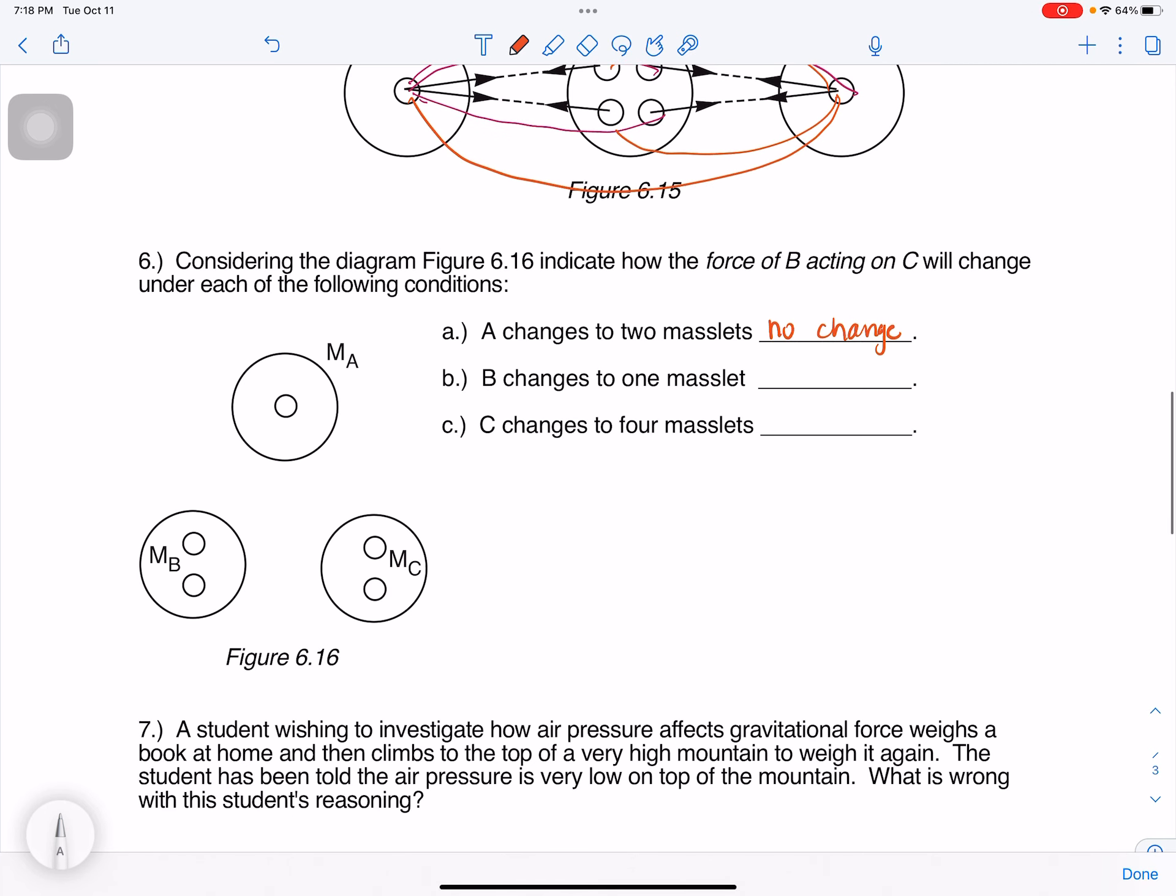B changes to one mass slit, so then we'll have one half the force. Because if we think about, if we calculate like F₁ is big G, and then we've got 2 times 2, and then over some distance R. The new one, I've got F₂ is G times, this should have been F₁, sorry. I get excited. G, and now I've got 1 times 2 over R. So one half the mass, I'm going to have one half the force. And then C changes to four mass slits. I'm doubling the mass slits, so I'm going to double the force.